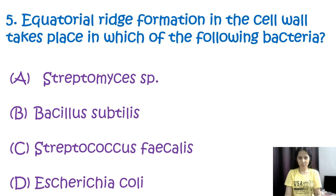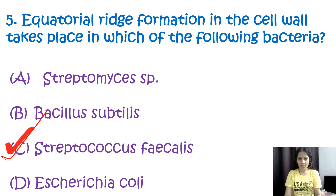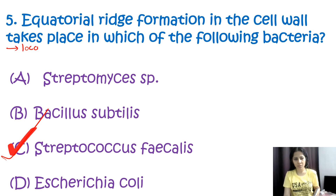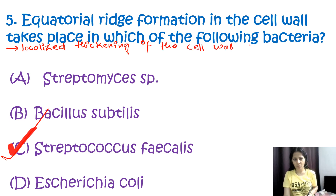Question number five: equatorial ridge formation in the cell wall takes place in which of the following bacteria? Options are Streptomyces species, Bacillus subtilis, Streptococcus faecalis, or Escherichia coli. The correct option is C, Streptococcus faecalis. The term equatorial ridge formation refers to the localized thickening of the cell wall that occurs at the midpoint of the cell where division takes place.